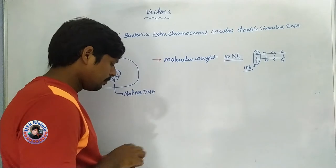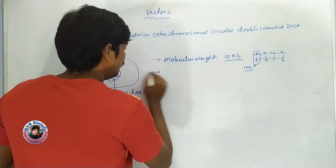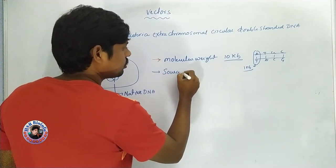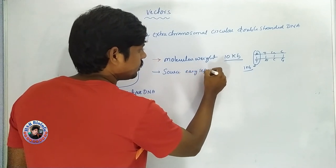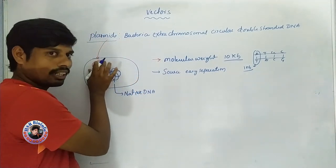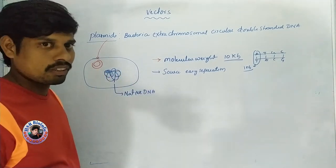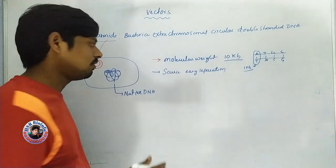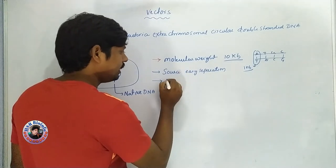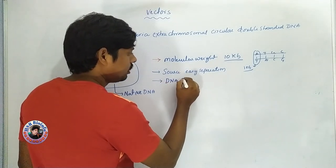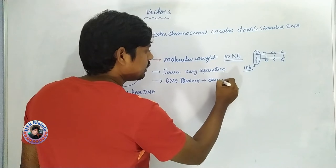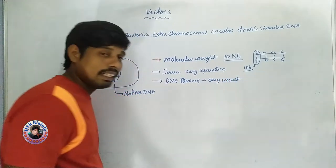The source is easy to separate from bacteria. The desired DNA or gene can be easily inserted into the plasmid. This is an easy insertion capacity.